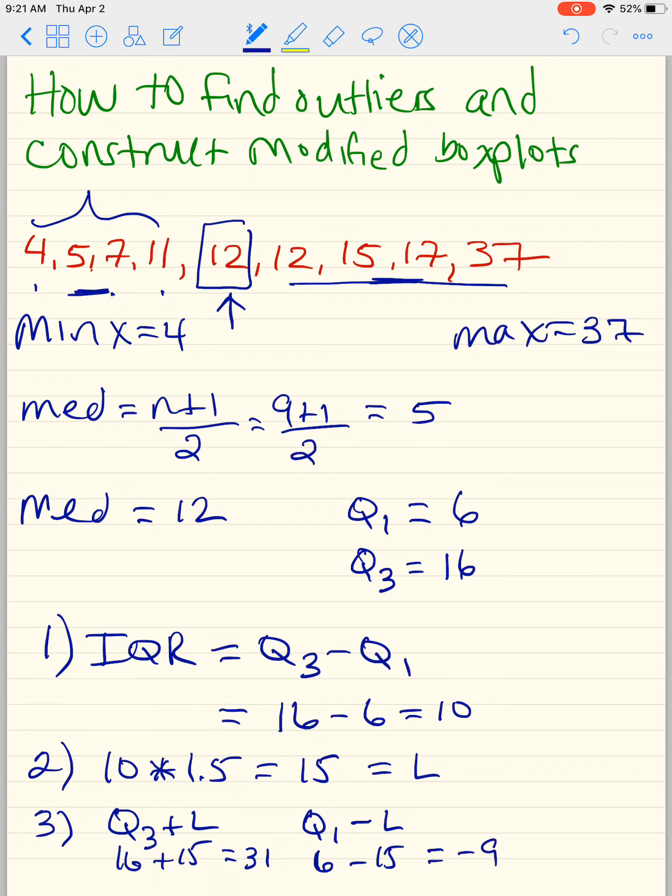Any numbers above 31 are considered an outlier. Any numbers below negative 9 is considered an outlier. So now we've checked, and we know that 37 is an outlier. And that's basically how we find outliers.